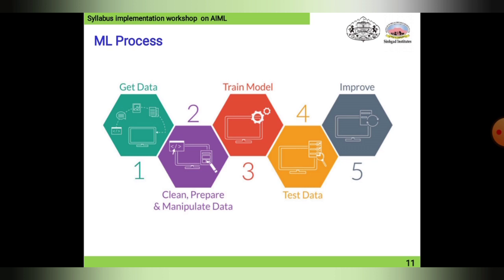The third stage is to train the model — in accordance with training the model, we define how the algorithm or the flow process will be carried out. The fourth stage is to test data, where all the training model output or combination of dataset results are tested. The fifth and final stage is to improve: after getting the results, if we need improvement, we go through this standard data procedure again, trying many combinations.